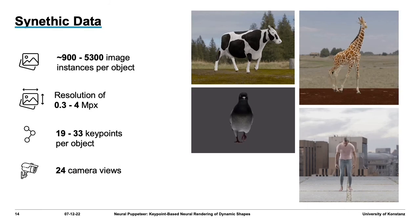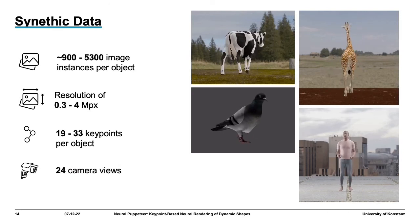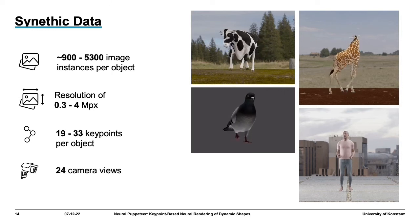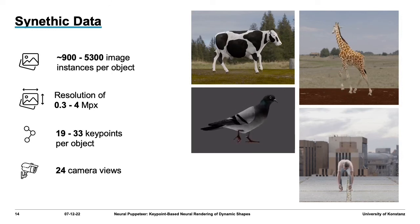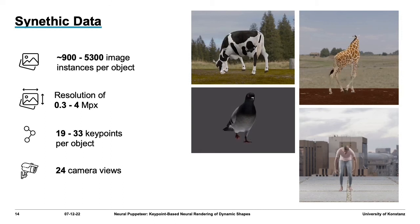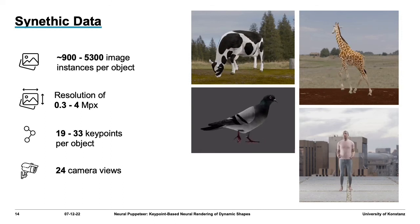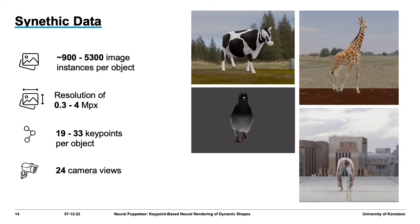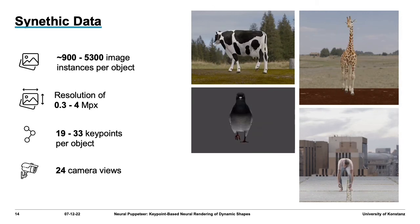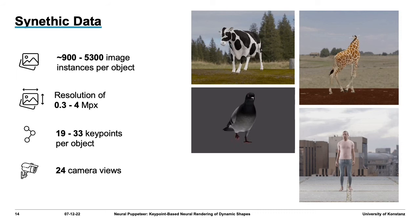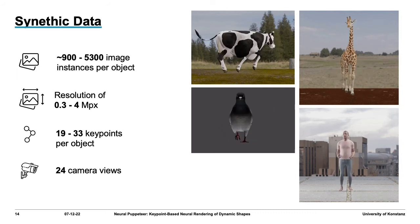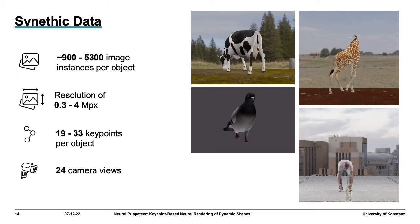Since available datasets for animals do not provide all the necessary information, we decided to explore our method on synthetic data. For this purpose, we generated high-quality data for four different specimens: cows, giraffes, pigeons, and humans. Our dataset has 24 posed cameras with high-quality ground truth RGB, depth, masks, and time-synchronized 3D keypoint locations.